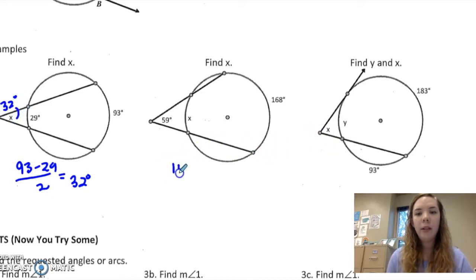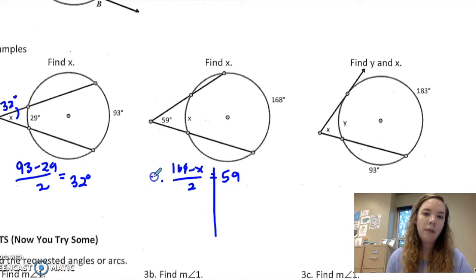And here, I'd have 168 minus x over 2 equals 59. And then I'd have to solve from there.